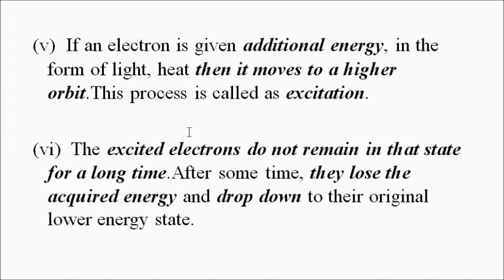Electrons at the higher state are called excited electrons. These excited electrons do not remain in that excited state for a long period of time; after a certain fixed interval they lose the acquired energy and drop down to their initial lower energy state. With the absorption of energy in the form of heat or light photons, electrons continuously move to higher excited states, and those already in excited states drop back to their initial state. This is a continuous process.